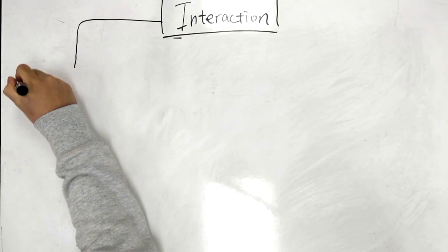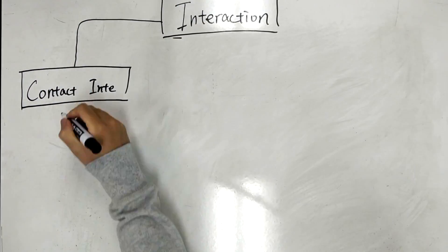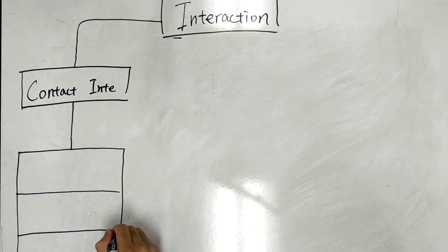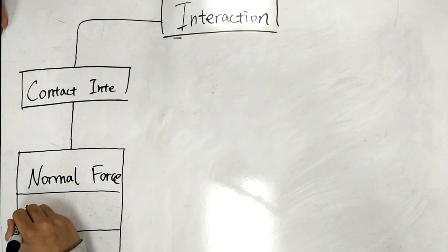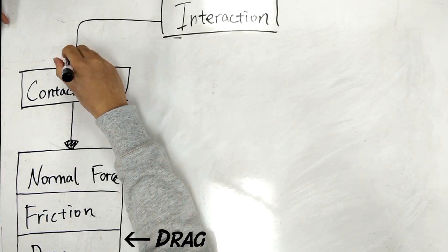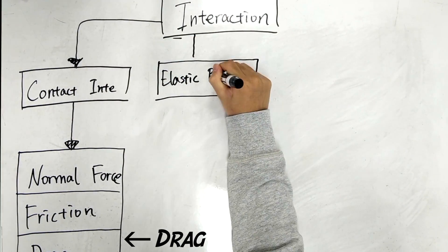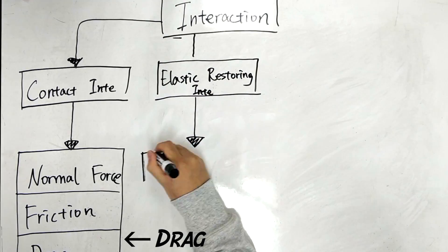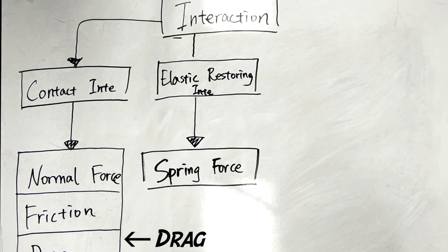Let's take a look at the interactions that occur in Newtonian physics. The contact interaction is first up, and it is responsible for the normal force, the friction force, and the force of drag. Second, we have the elastic restoring interaction, and this is responsible for the spring force.